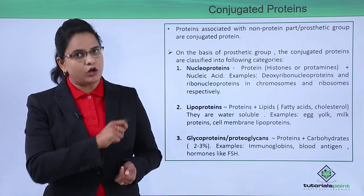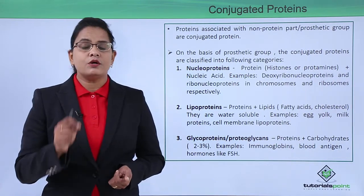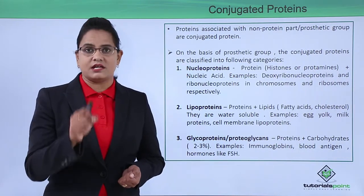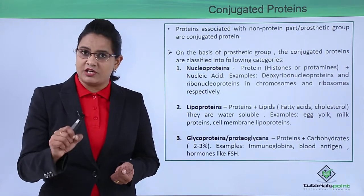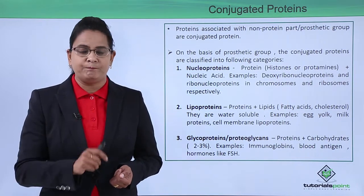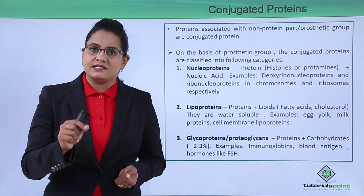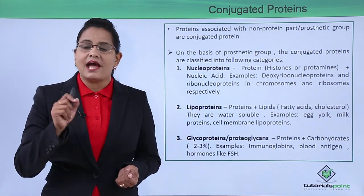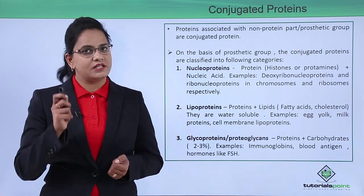The first category is nucleoproteins. As the name suggests, the protein is associated with nucleic acid, which is a genetic information-transferring material and a biomacromolecule. These proteins are present in deoxyribonucleoproteins — that is, DNA — and inside RNA. So they can be present inside the nucleus or the cytoplasm.